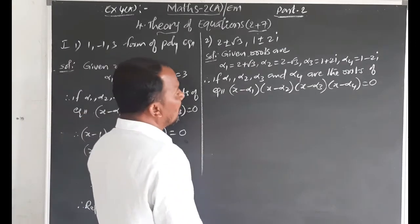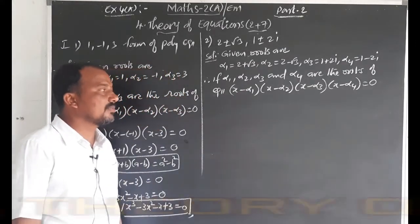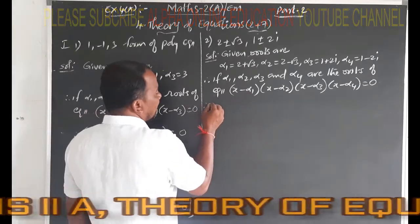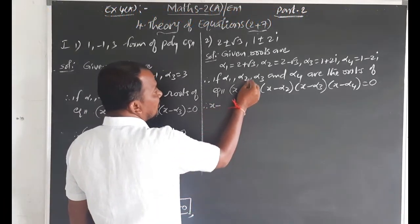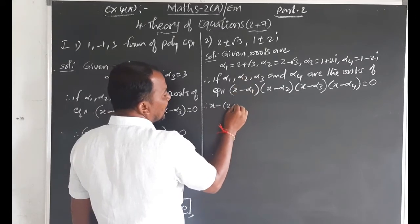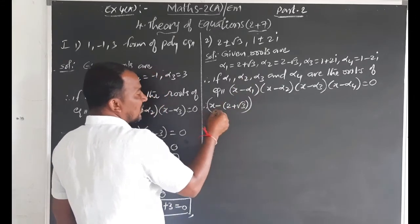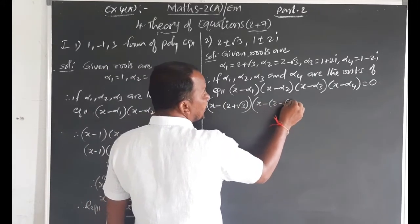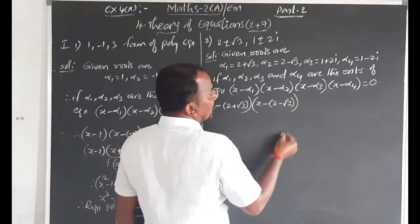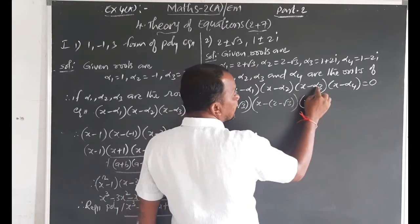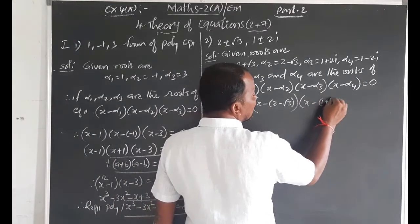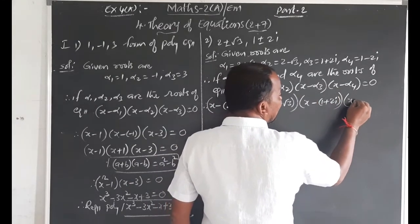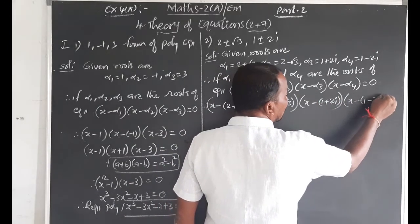Substitute the values of α₁, α₂, α₃, α₄. Therefore: (x - (2 + √3))(x - (2 - √3)) · (x - (1 + 2i))(x - (1 - 2i)) = 0.